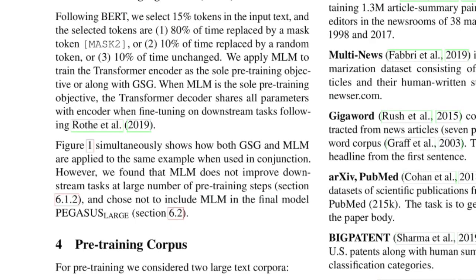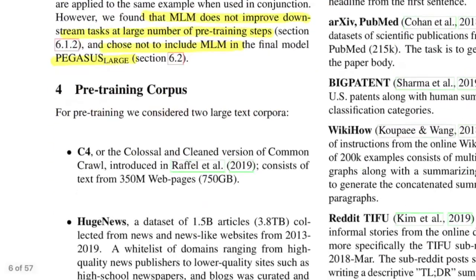As discussed in the earlier diagram, the base model was trained with two objective functions: gap sentence generation and masked language modeling — similar to BERT, where 15% of tokens are selected, 80% of the time masked, 10% replaced with a random token, and 10% kept unchanged. After experimentation, they found MLM does not improve the downstream task at a large number of pre-training steps, so they didn't use MLM for the final model — PEGASUS large.